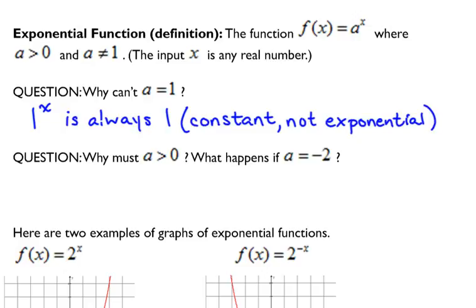If a were negative 2, and let's say we plug in 0 for x, anything to the 0 power is 1. So that would give us an answer of 1. Let's say we plug in 1 for x, negative 2 to the first is negative 2. Let's say x is 2, negative 2 squared, what does that give us? 4.